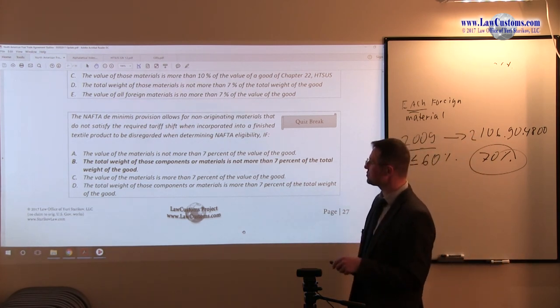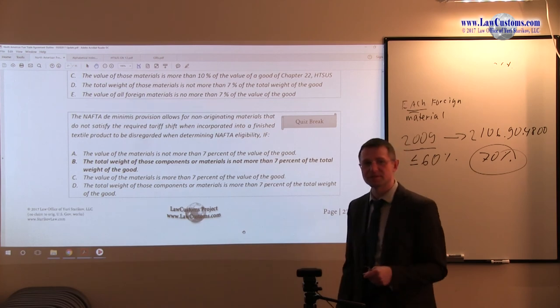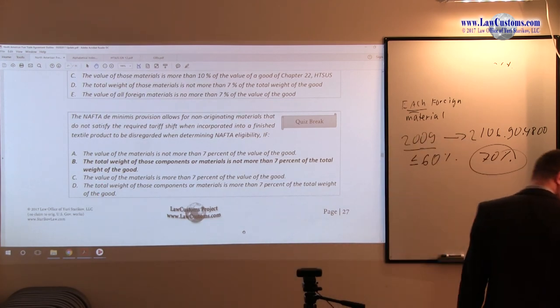Because you have 7% rule and you have weight and you have a textile, so B is the correct answer choice for this one.